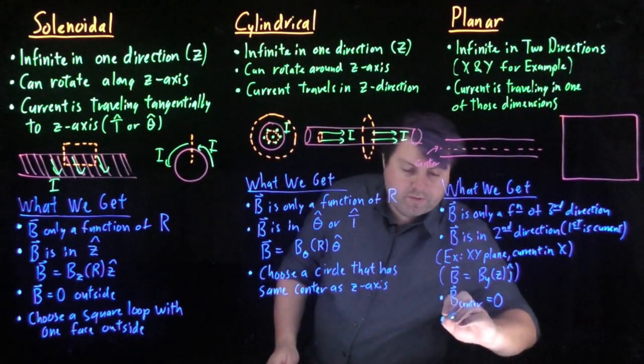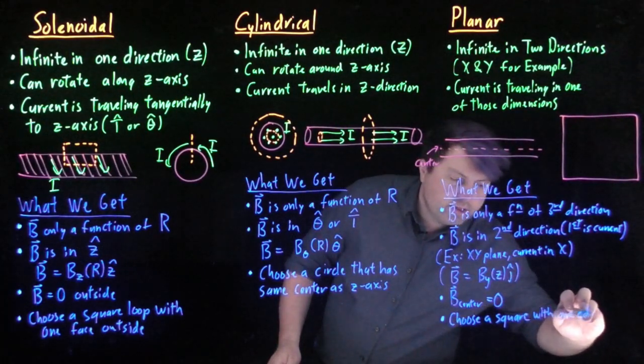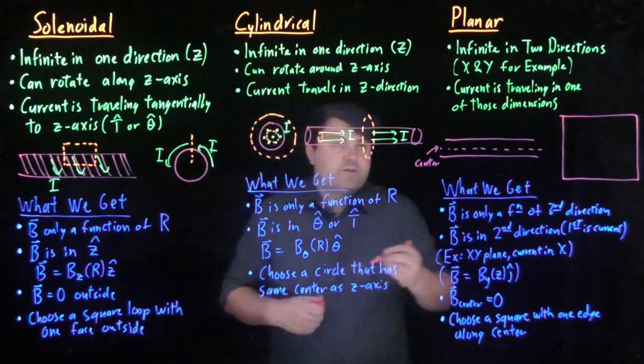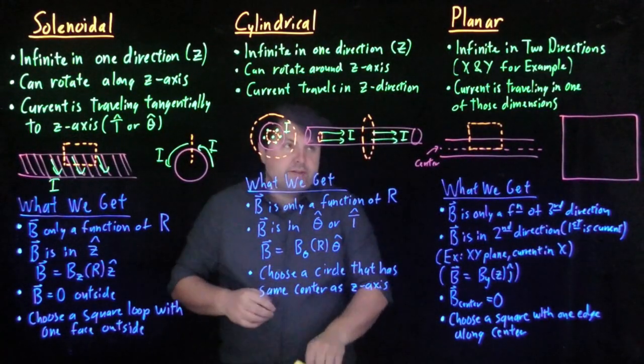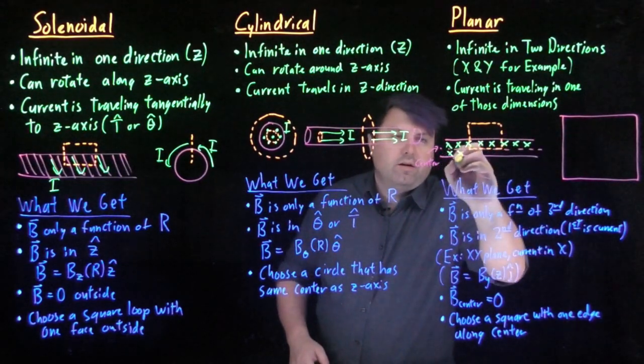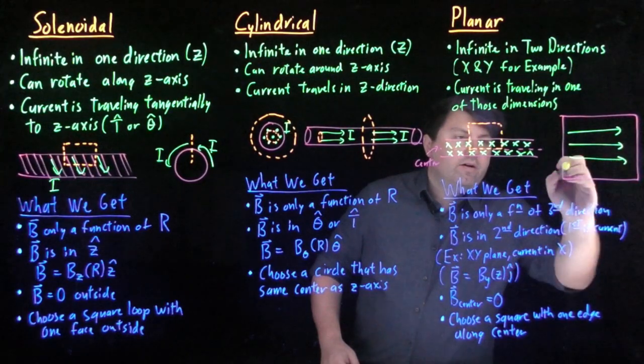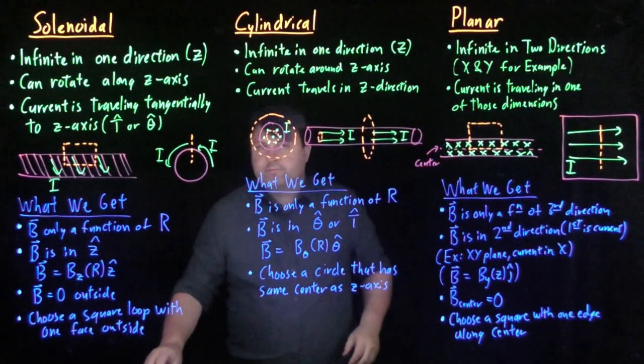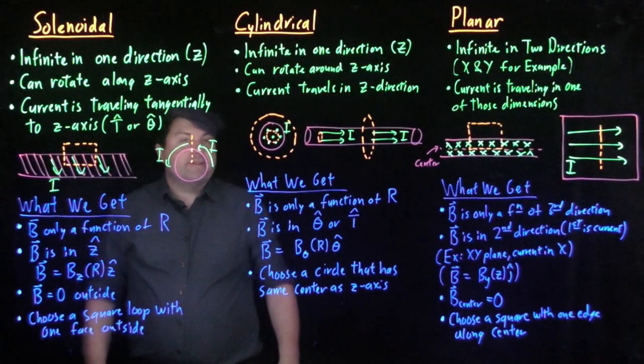So how do we solve these with the Amperian loops? We choose a square with one edge along the center. So if we have this then, we would have it like, so this is if we had that our current was coming into page. And then what it would look like here is if we have a current traveling along this way, we would have an Amperian loop perpendicular to that. So these are how we choose our Amperian loops based on which symmetry our current distribution has.